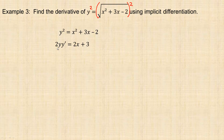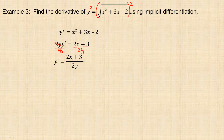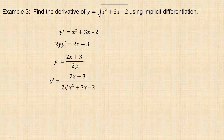In order to solve for y prime, I divide both sides by 2y. Those divide out, and the derivative is y prime equals (2x plus 3) over 2y. Now in this case, I can substitute y back: since y equals the square root of (x squared plus 3x minus 2), I can replace y in the denominator. Both forms are valid — y prime in terms of y, or y prime with the radical substituted in.